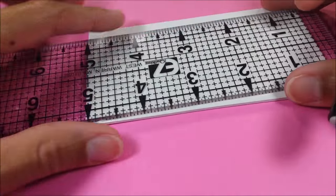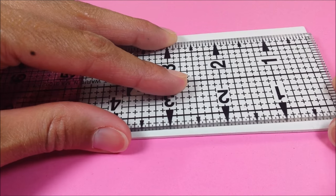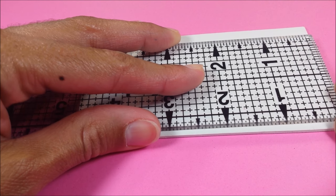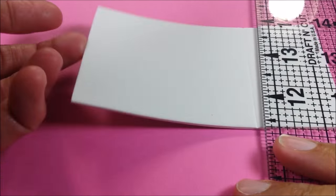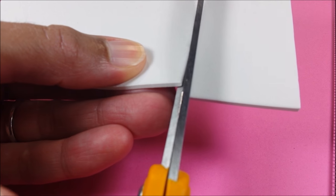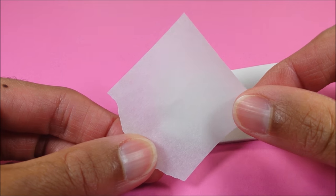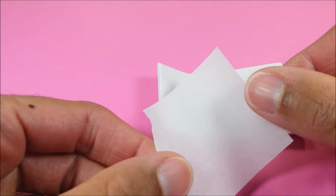First I take my craft foam paper and I'm measuring out a section that is about 1.5 inches wide and I just cut it out.